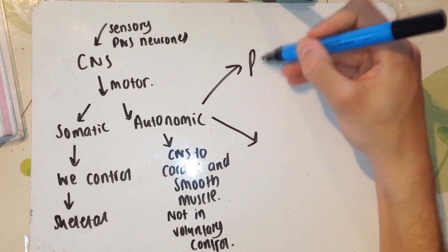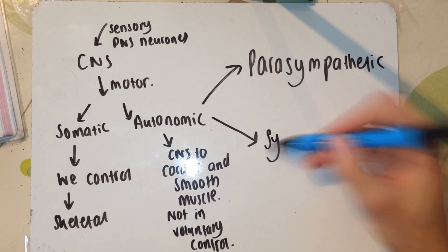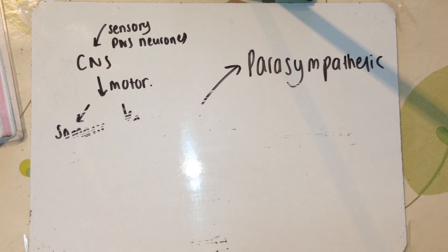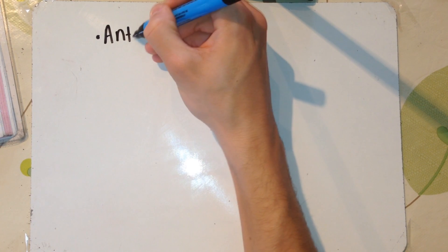The autonomic nervous system consists of parasympathetic and sympathetic neurons. The way they work is described as an antagonistic system, because this basically means one way will affect the other. It's kind of the opposite.